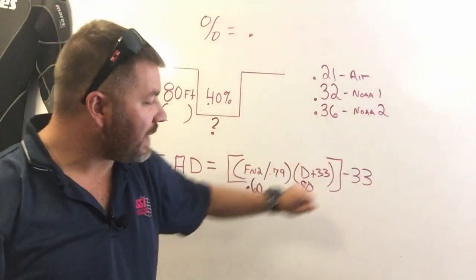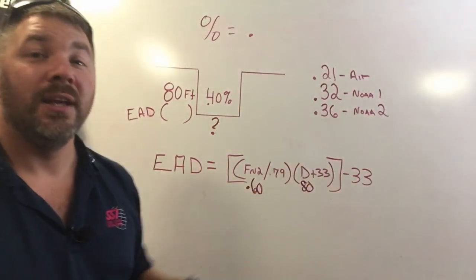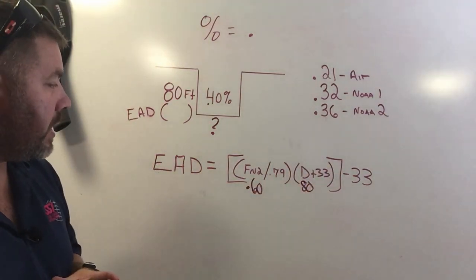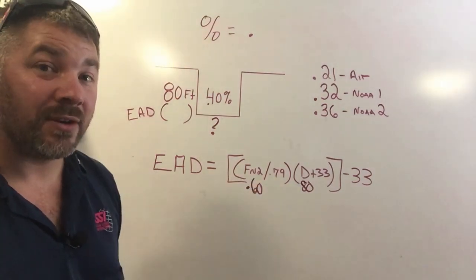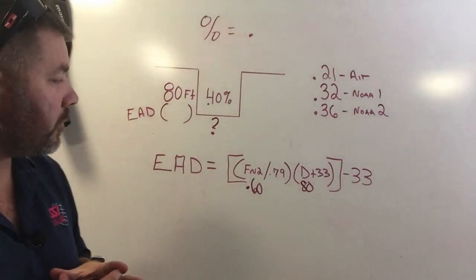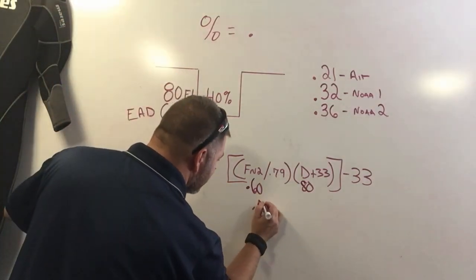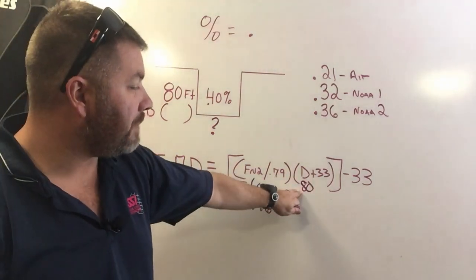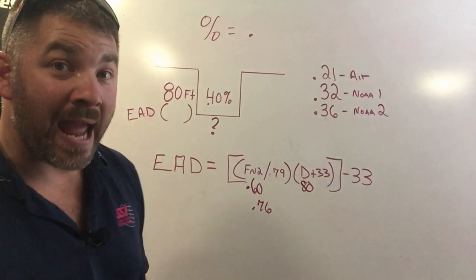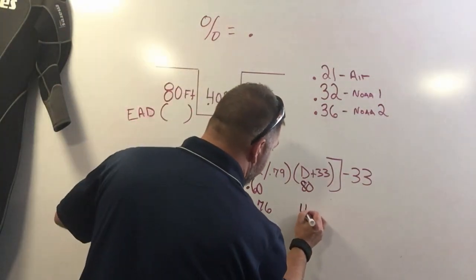Plugging in that information, I have all the variables that I need to effectively do the equivalent air depth equation. I have 0.60, I'm going to divide it by standard nitrogen partial pressure, and that's going to give me an answer of 0.76. Then I'm going to have to do this part of the parenthesis before I move on. I have a depth of 80 feet, I'm going to add an atmosphere to it which is 33, and that's going to give me an answer of 113.